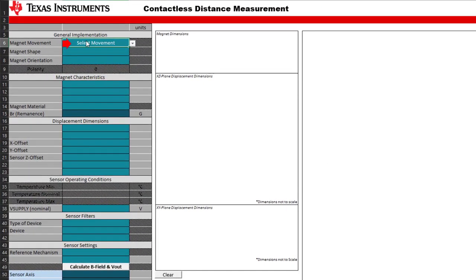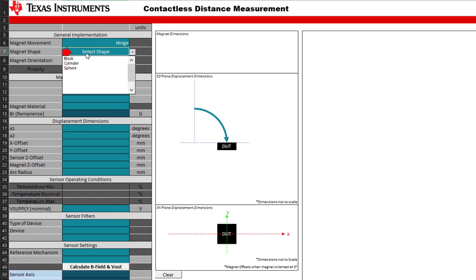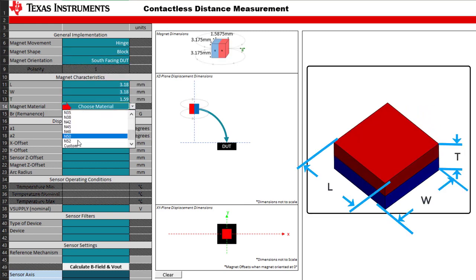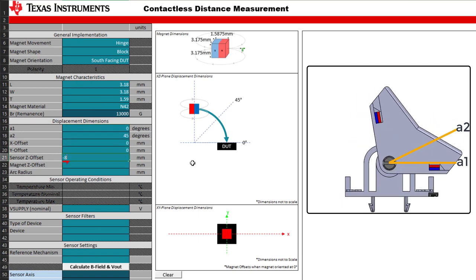After opening the tool, we can select Magnet Movement, Shape, and Orientation. Subsequently, we can enter the magnet dimensions and the relevant displacement values we would like to try in our design.